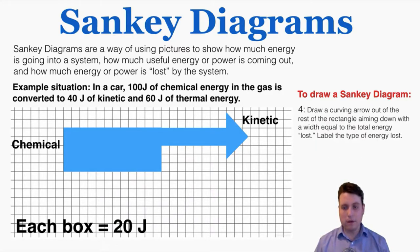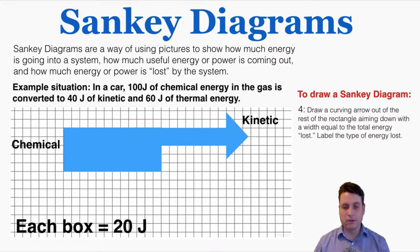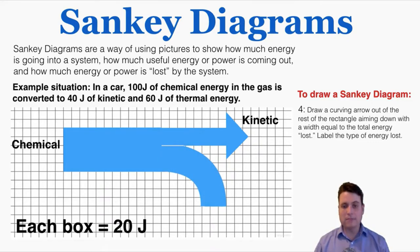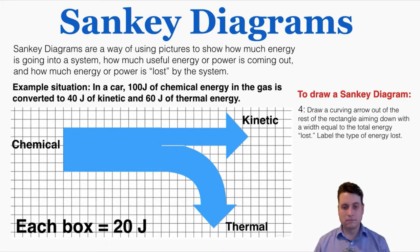Step four is to draw a curving arrow out of the rest of the rectangle aiming down, with a width equal to the total energy lost, and label the type of energy lost. Here we're losing thermal energy. Because 40 joules was converted into useful kinetic energy, the remaining 60 joules — three boxes — was converted into thermal energy. So I make this arrow aiming down to represent the lost energy, labeled thermal energy. This is what a Sankey diagram looks like for this situation. You can see it's good at showing the exact proportions of energy input versus useful and useless energy output.